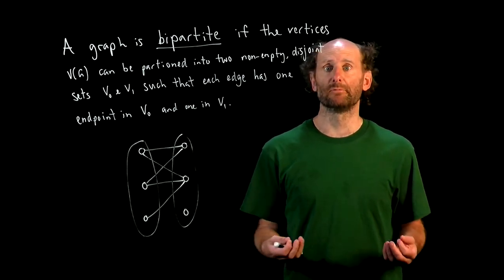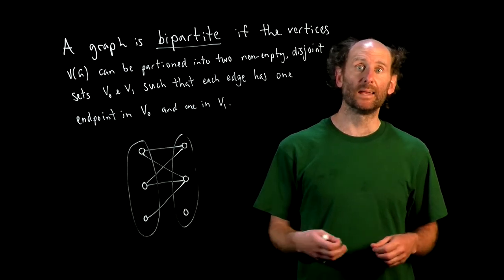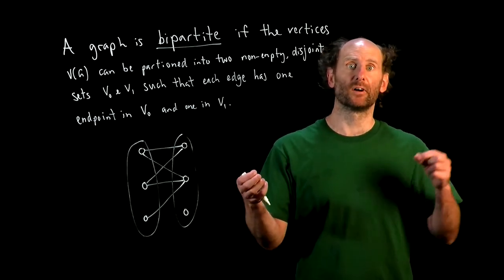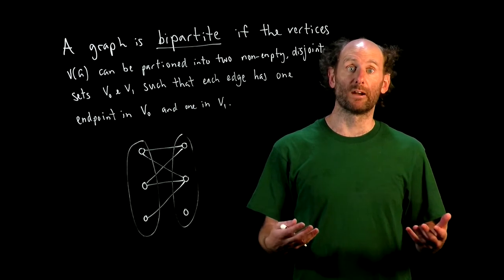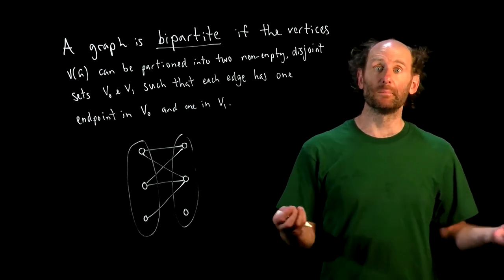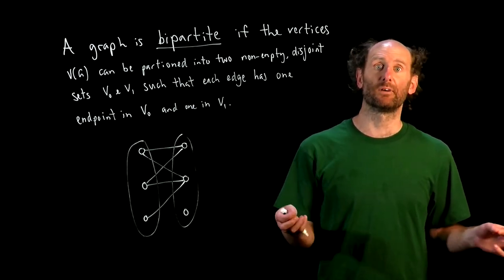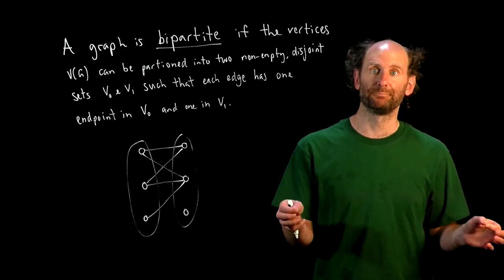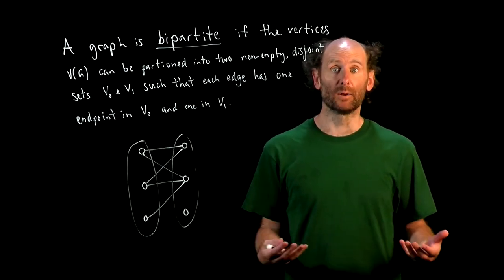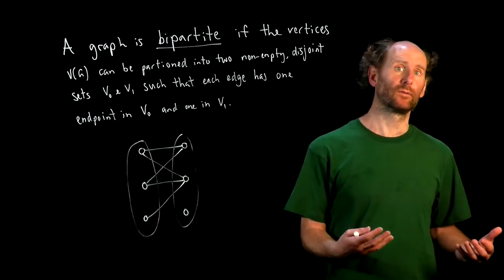For example, vertices may represent customers and employees, and edges show which employees are assigned to which customer. Or a graph might show the male and female of some species, and an edge represents a mating pair.